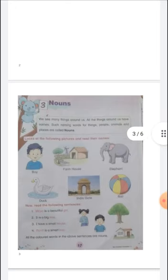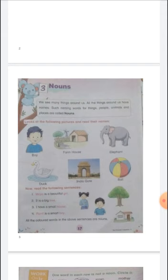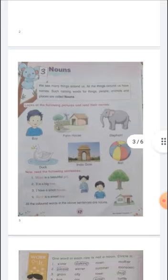We see many things around us. All the things around us have nouns — naming words for things, people, animals, and places are called nouns. The common definition is: a noun is the name of a person, place, or thing. A noun is also known as a naming word.